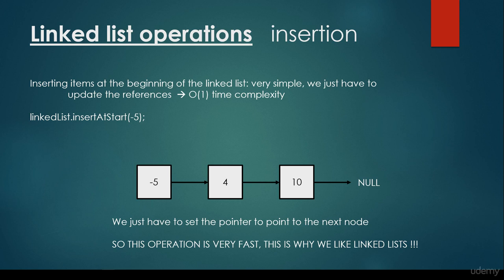It's very important to see that we like arrays because of the random access and because we can insert items at the end of the list very fast — O(1) time complexity. We like LinkedLists because we can insert items at the beginning, not at the end, very fast — O(1) time complexity.